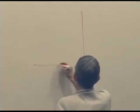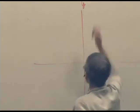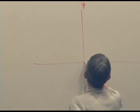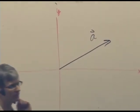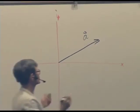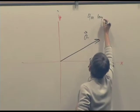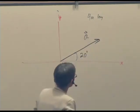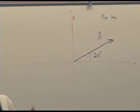Let's work in two dimensions because it's easier to draw here. Here's an x-axis, here's a y-axis. Suppose we have some vector A here and you're told that it's four meters long and that this angle is 20 degrees — how do we write the real vector out?